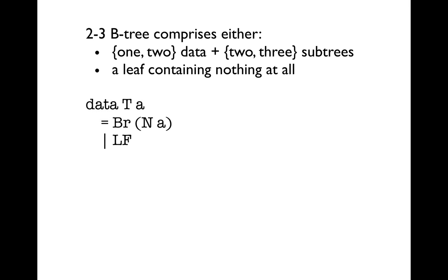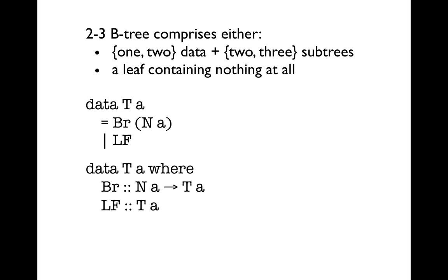Consider the types of the constructors in our definition of T. For example, the branch constructor is a function that takes an argument of type N of A and constructs a T of A. Whereas our ordinary data definition lists the types of the components of each constructor from which the types of the constructors are inferred, a GADT-style definition gives the type of the constructor itself and the types of the components are inferred. The important difference is that a GADT gives the result type of each constructor explicitly, whereas the ordinary definition always implies that all constructor result types are the same as the type being defined.